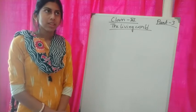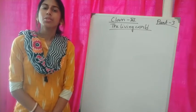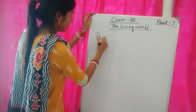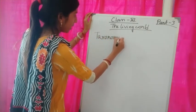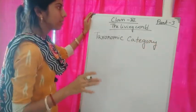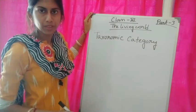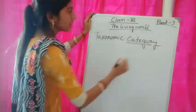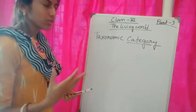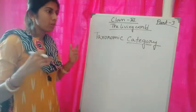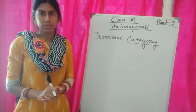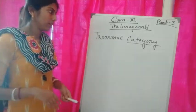Today we will start with a new term: taxonomy category. In our last class you came to know what taxonomy is. Now this term is new — what does taxonomy category mean? Classification is not a single step process; it involves a hierarchy of steps, and each step is called a category. It is a unit.